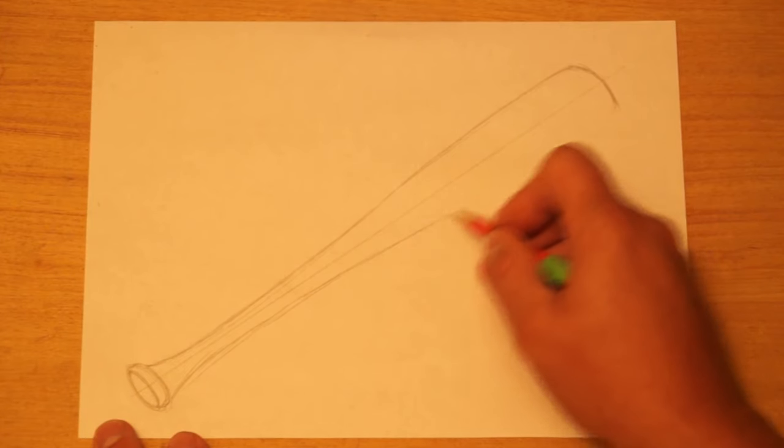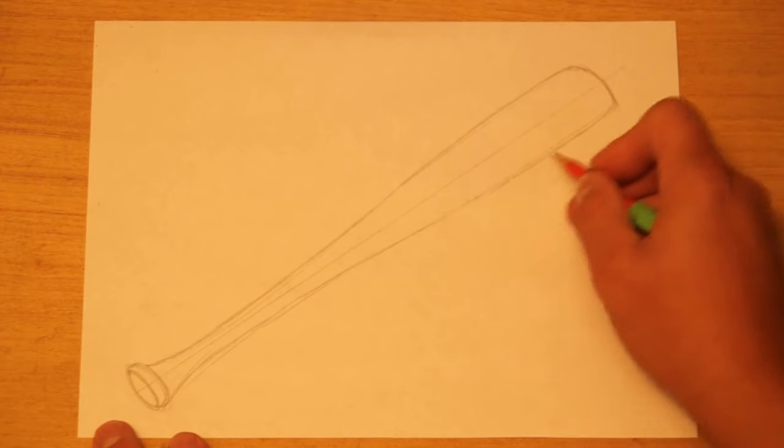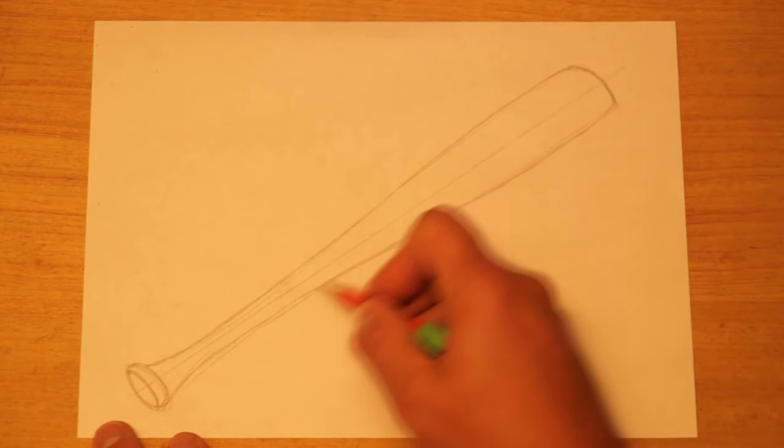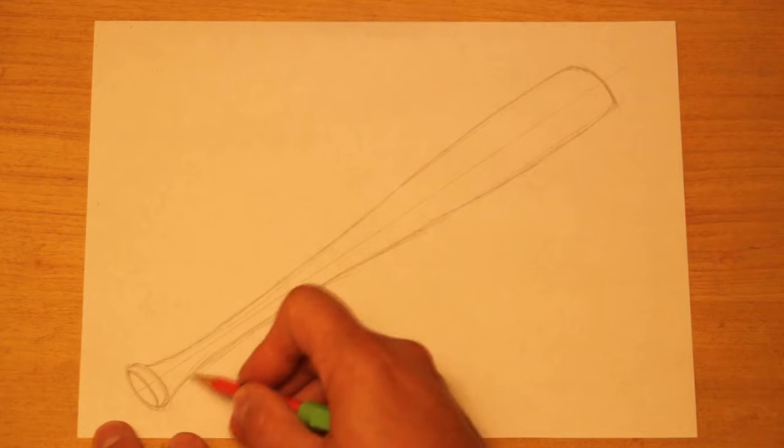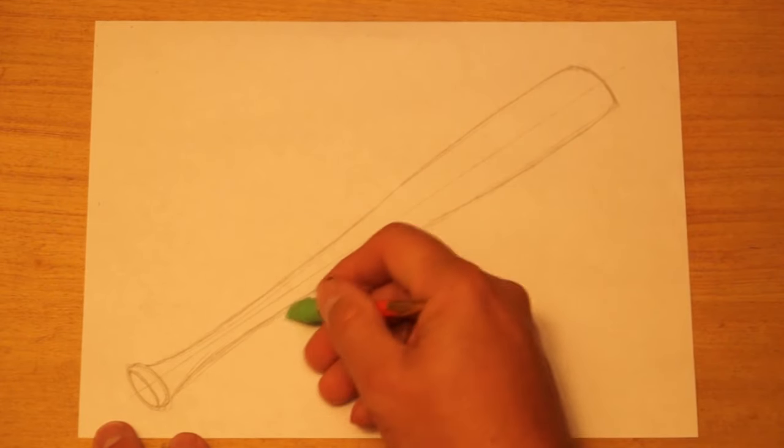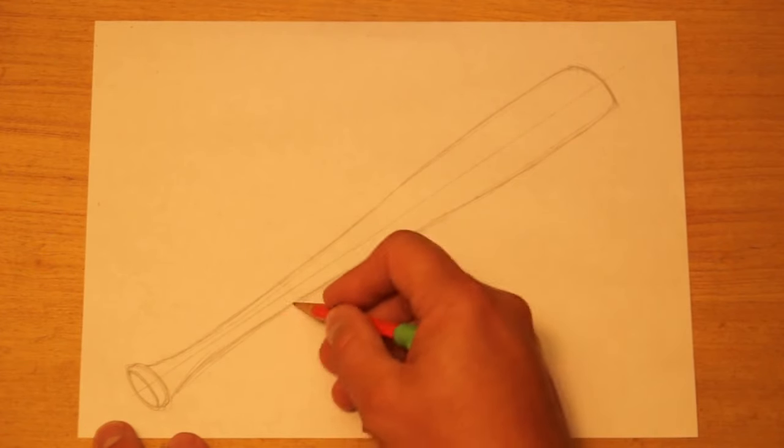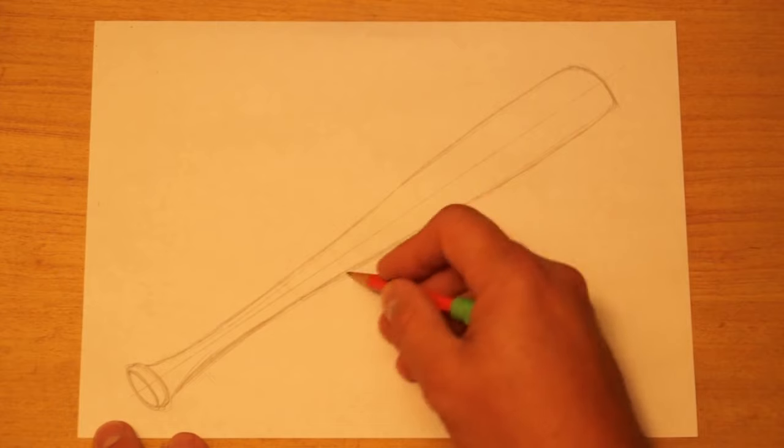Now, this may take some practice. I did do a practice one earlier. But to get that right, you may have to work with your line a little bit. And, of course, you'll need to erase and clean up when you're done. This is the basic shape of the bat.